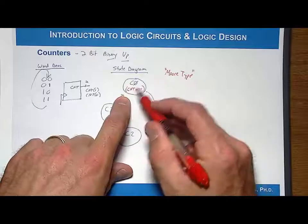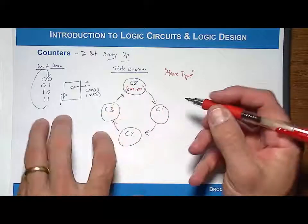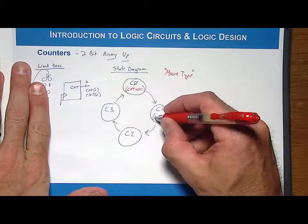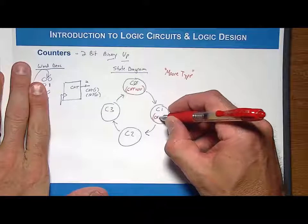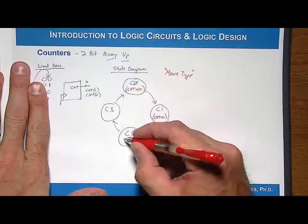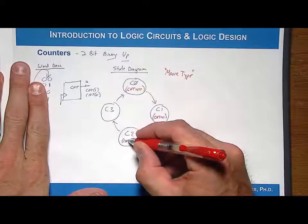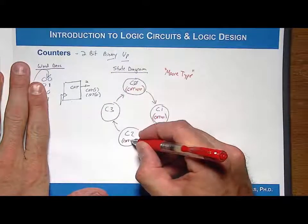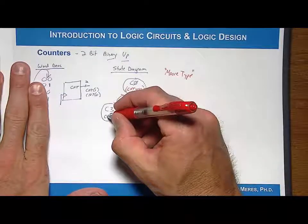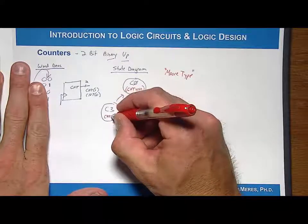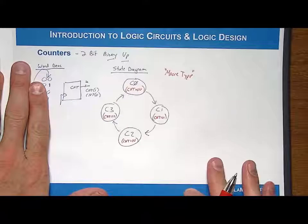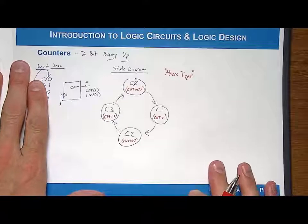When in C1, CNT is equal to 01. When in C2, CNT is equal to 10. And over in C3, CNT is equal to 11. And there you go — that's the state diagram for this counter.